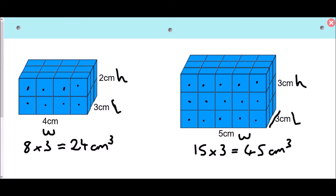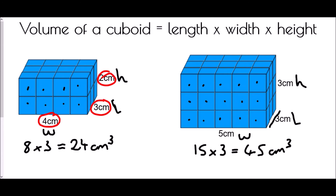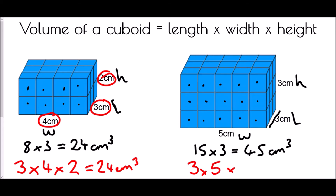But counting cubes isn't always possible. A quicker way is to use the formula for the volume of a cuboid: length times width times height. For the first shape: three times four times two — three times four is twelve, times two is 24. For the second: three times five times three — three times five is fifteen, times three is 45 centimeters cubed.